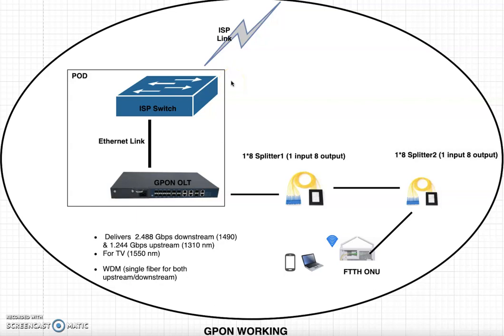Hello everyone, this is a short video regarding the working principle of Gigabit Passive Optical Network (GPON) technology. We have one link from the ISP which is connected to the Point of Distribution (PoD). The PoD may contain multiple routers, switches, OLTs, and backups. The link from the ISP is connected to the ISP switch.